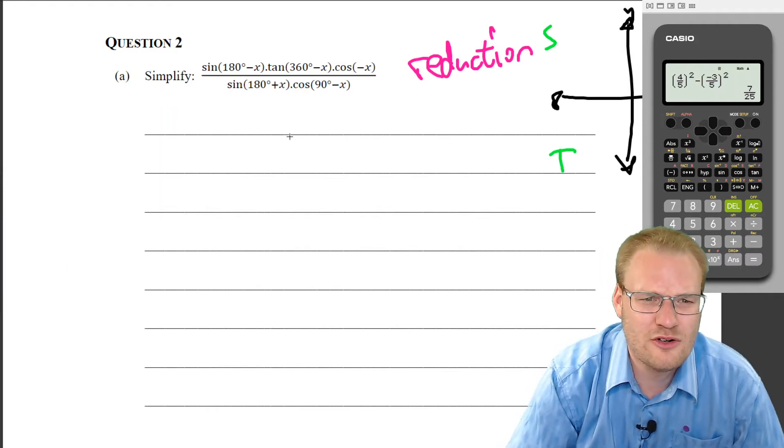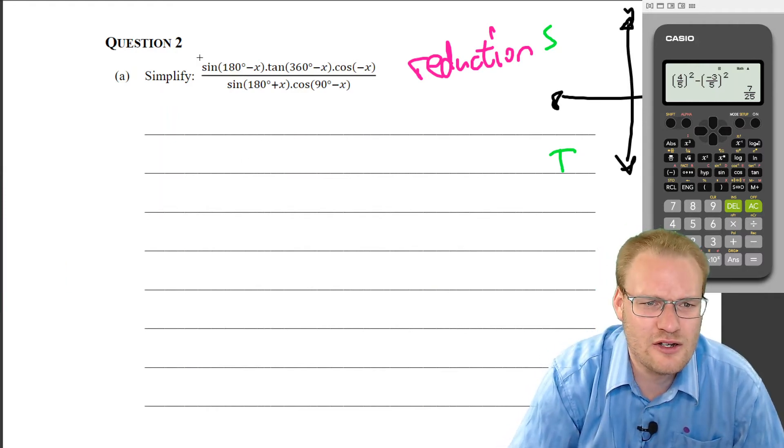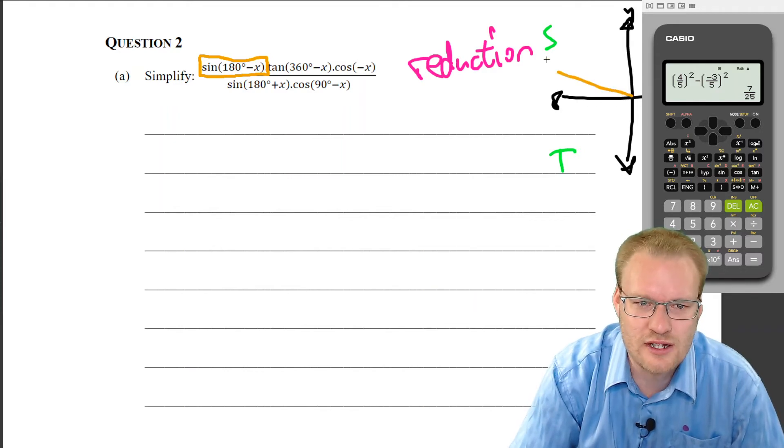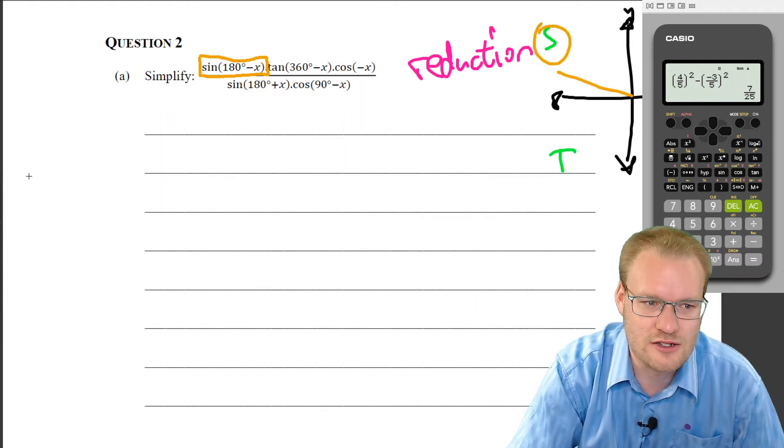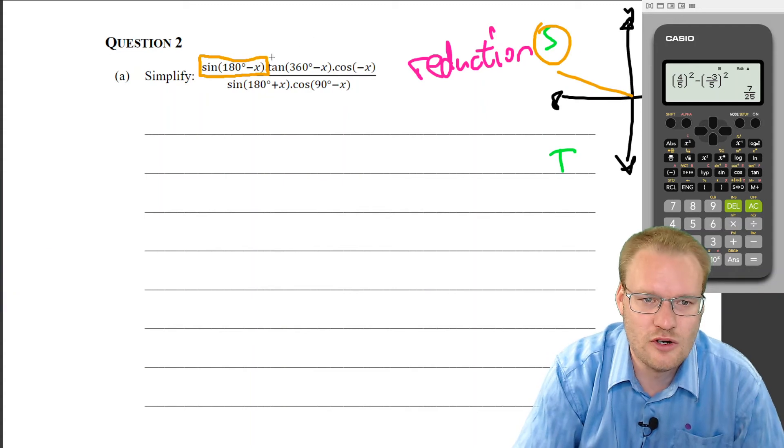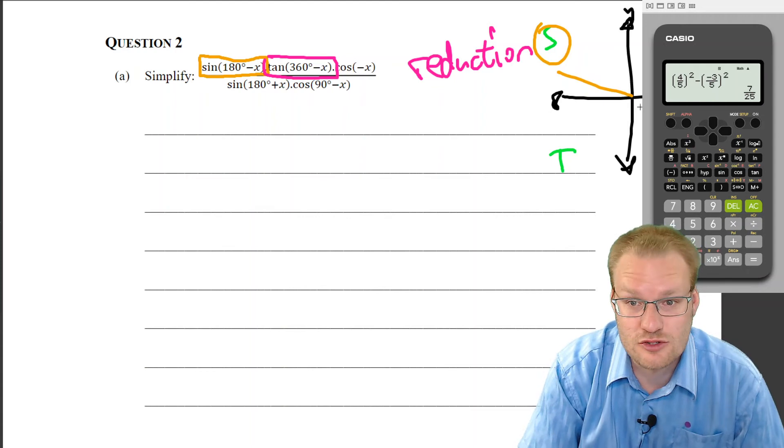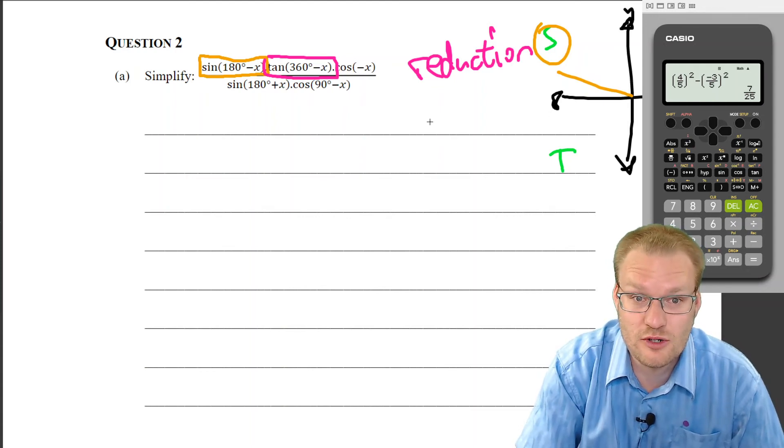What do we need to remember for these again? If things are 180 plus or minus, then it's going to stay a sine. Same thing for this - we know that it's going to stay tan, and let's just work out if it's positive or negative from the quadrant.